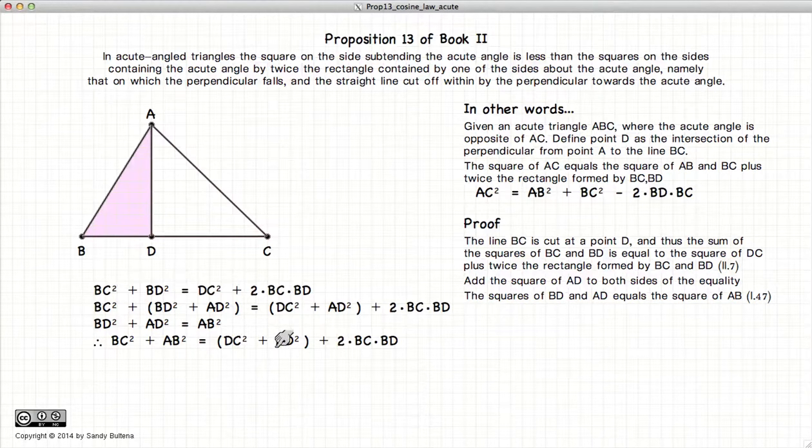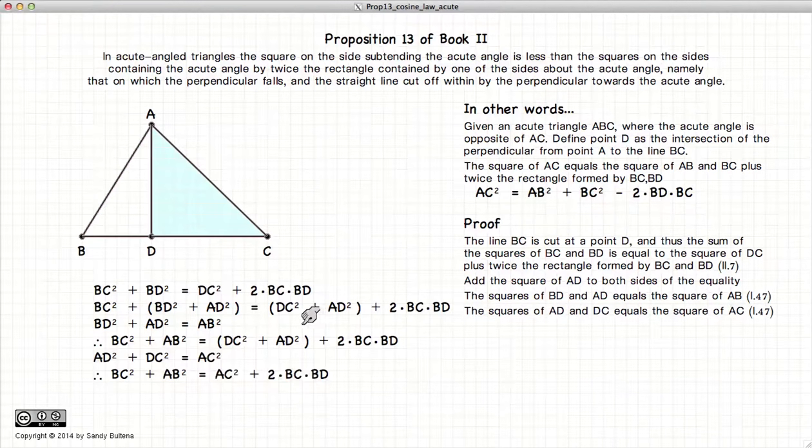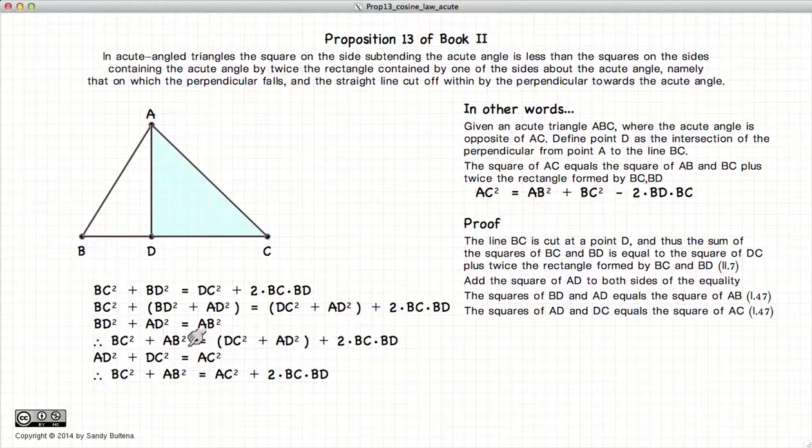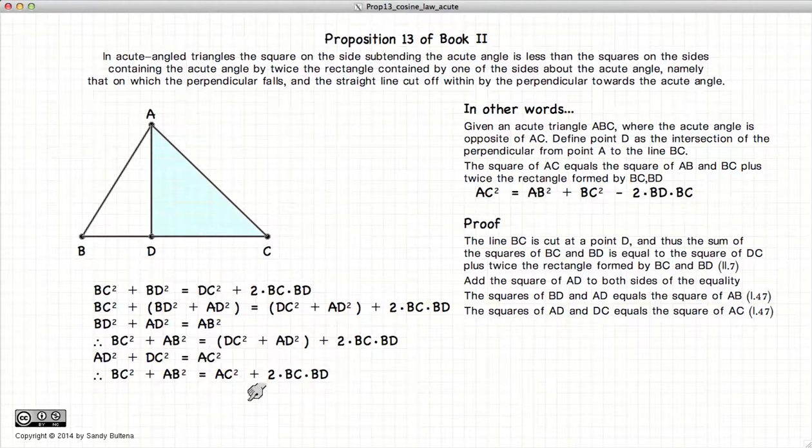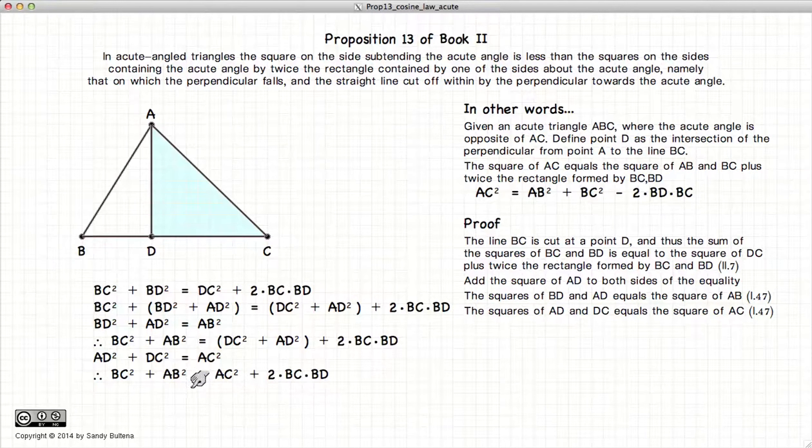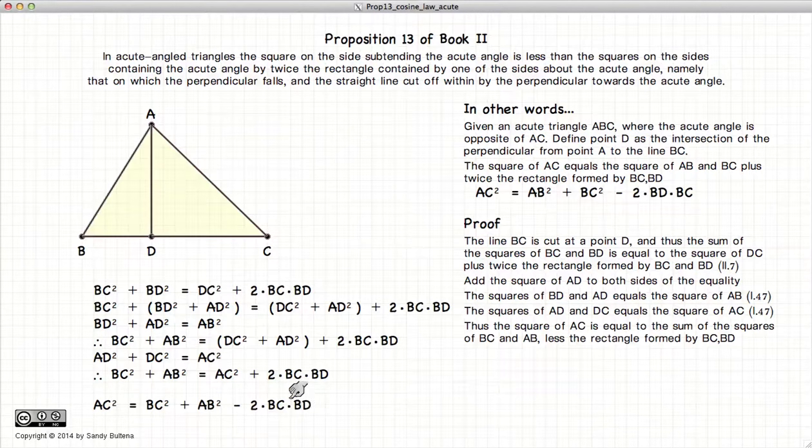Now what's DC squared plus AD squared? Again, we go back to Pythagoras. AD squared plus DC squared equals AC squared. Again, substituting AC squared for this bit of the equation, we now have BC squared plus AB squared equals AC squared plus 2 times BC times BD. Or taking this and moving it to the other side of the equation, we have this equation here, which again is simply the cosine law, without actually using cosines.